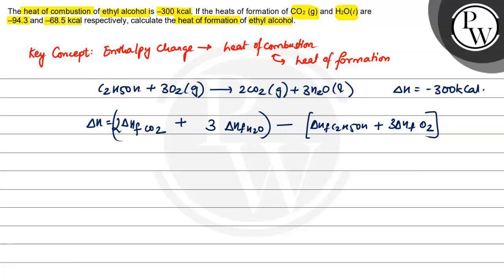So we have 2 times ΔHf of CO2, which is given as -94.3, plus 3 times ΔHf of H2O, which is -68.5. We have ΔH which is -300 kilocalories, minus ΔHf of C2H5OH.